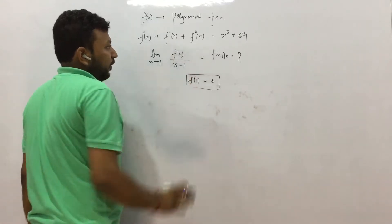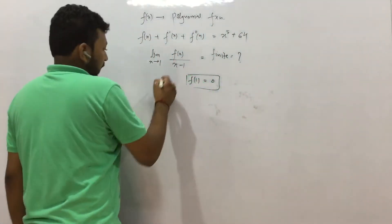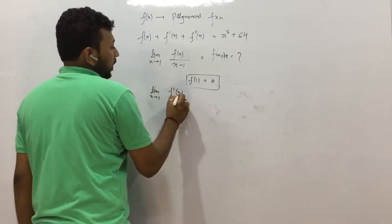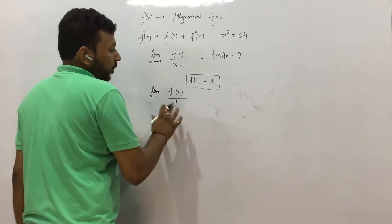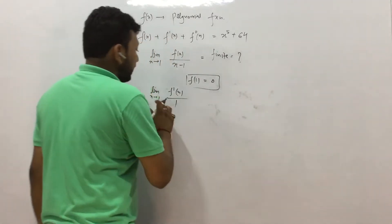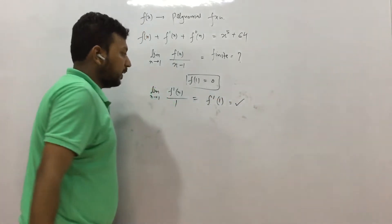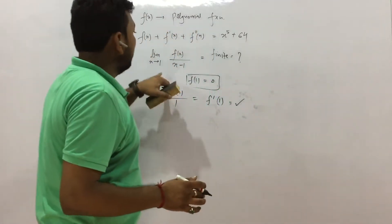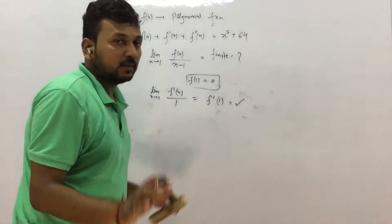If that is the case, we can do derivative up and below using L'Hôpital's rule. So what do we have? We have limit x tending to 1, f'(x)/1. So now this denominator is 1, that means your answer is f'(1). This is the correct answer. We put x equal to 1.